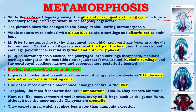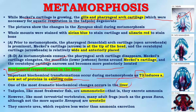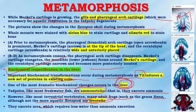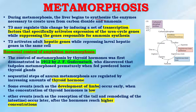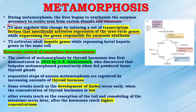Biochemical re-specification in the liver: an important biochemical transformation occurs during metamorphosis as triiodothyronine (T3) induces a new set of proteins in existing cells. One of the most dramatic biochemical changes occurs in the liver. Tadpoles, like most freshwater fish, are ammonotelic — they excrete ammonia. However, like most terrestrial vertebrates, many adult frogs such as genus Rana, although not the more aquatic Xenopus, are ureotelic — they excrete urea, which requires less water than ammonia excretion. During metamorphosis, the liver begins to synthesize the enzymes necessary to create urea from carbon dioxide and ammonia. T3 may regulate this change by inducing a set of transcription factors that specifically activates expression of the urea cycle genes while suppressing the genes responsible for ammonia synthesis. T3 activates adult hepatic genes while repressing larval hepatic genes in the same cell.